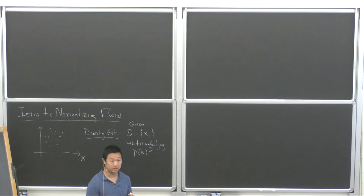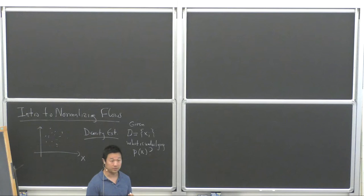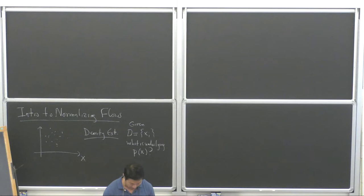In the examples I'll show you, there's going to be a five-dimensional example and a 500-dimensional example. We're also working on examples with 50,000 dimensions. So there's a wide range of possibilities. That's density estimation.